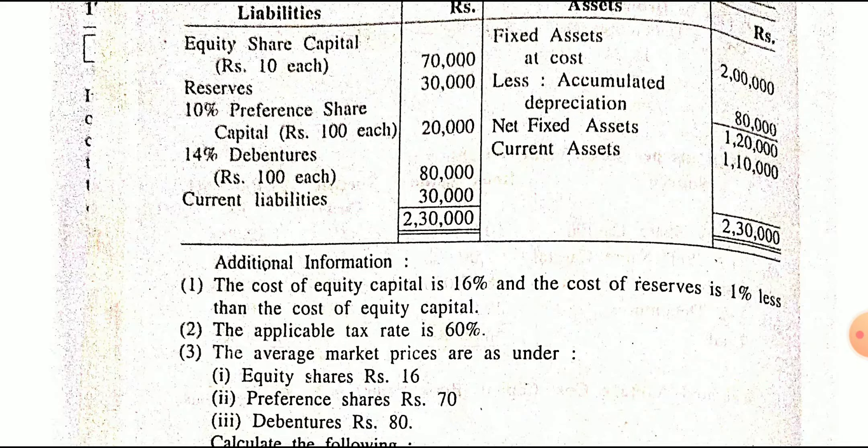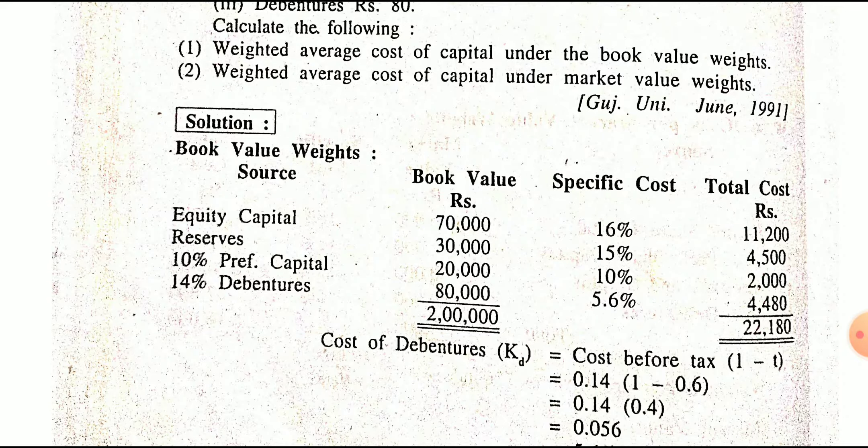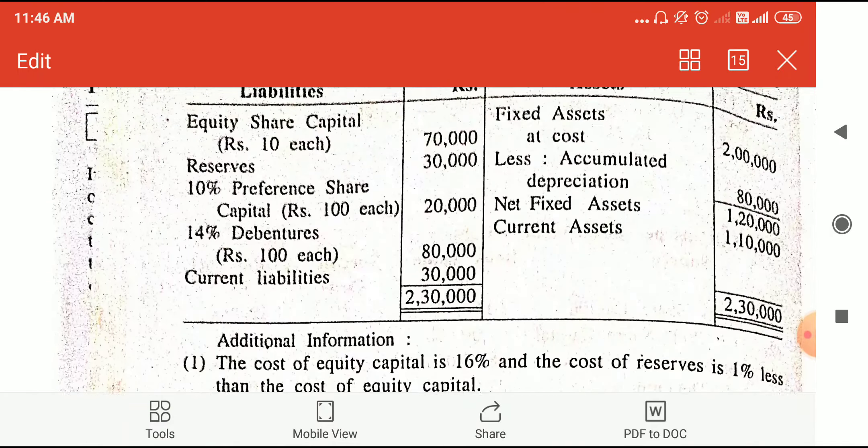For book value: equity, reserve, preference, and debenture — the book prices already given are 70,000, 30,000, 20,000, and 80,000. Specific costs given: equity cost is 16%, reserve 1% less so 15%. Preference share is 10% and debenture is 14% before tax. Tax applicable is 60%, so tax is deducted from debenture — not from preference share or equity share. After-tax debenture cost is 5.6%. Total cost divided by total value: 22,180 divided by 2 lakh.